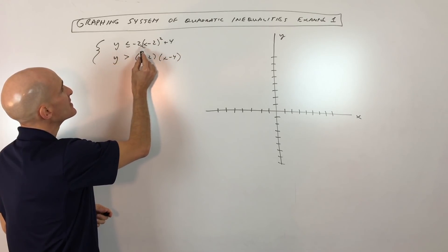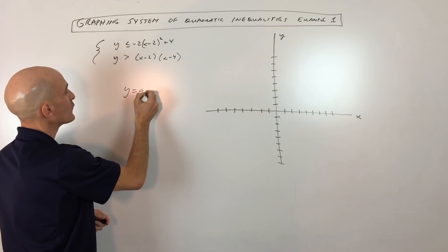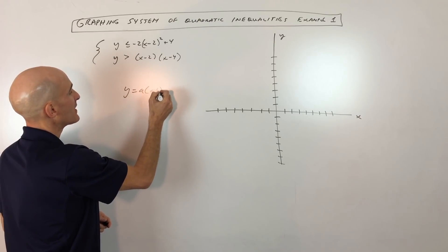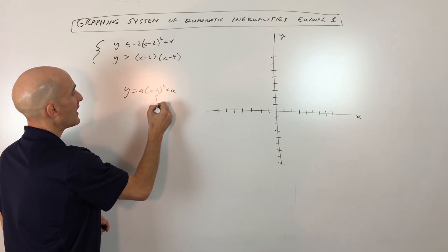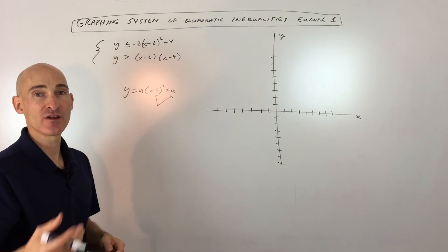This first one, you can see that it's in vertex form. Now remember, vertex form is like this: a(x - h)² + k. h and k, that's the vertex of the parabola.